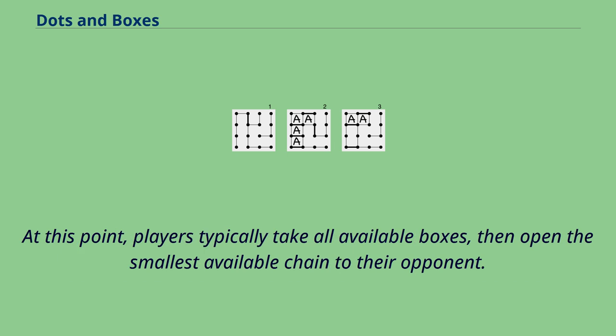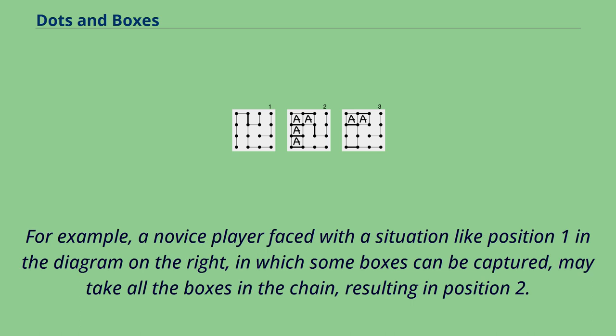At this point, players typically take all available boxes, then open the smallest available chain to their opponent. For example, a novice player faced with a situation like position 1 in the diagram on the right, in which some boxes can be captured, may take all the boxes in the chain, resulting in position 2.